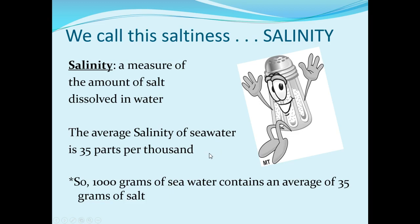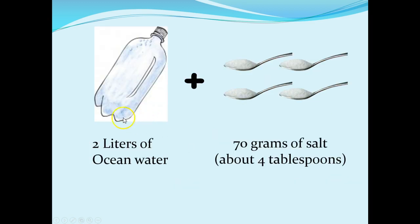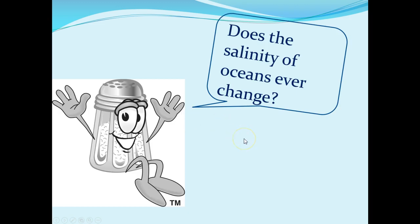To put that in perspective, if you had a two-liter bottle full of ocean water, inside that two-liter bottle there would be about four tablespoons of salt — 70 grams of salt is right about four tablespoons. So four tablespoons of salt in a two-liter bottle of water is about the average saltiness of the ocean. Does that change? We kept saying 'average,' so yes, it can change.